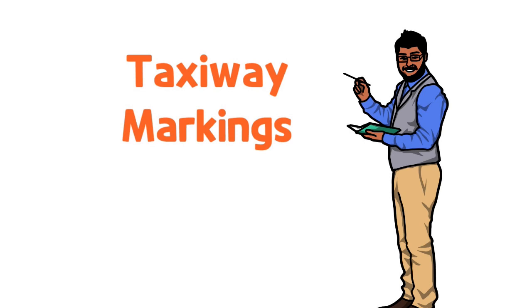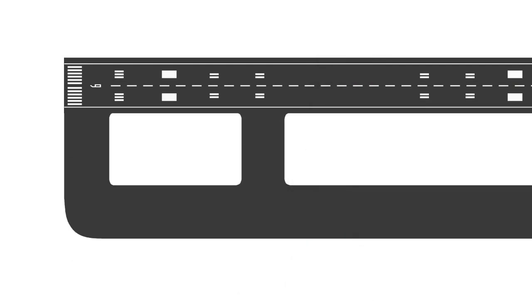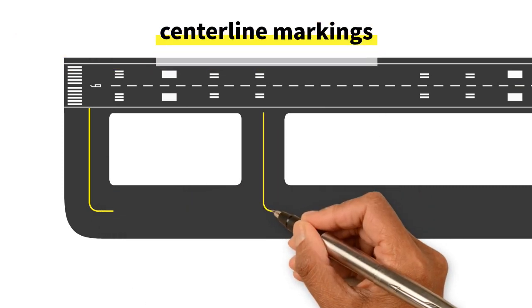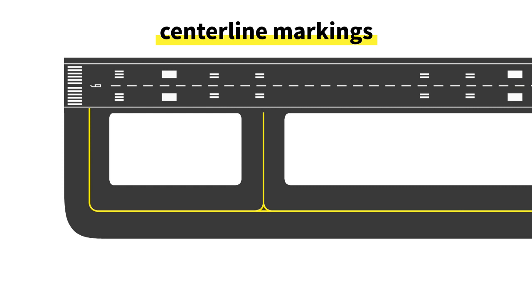Unlike the marking of the runway, all taxiway markings are yellow. Here's a runway and a taxiway. All taxiways, regardless of their width, have a surface painted taxiway centerline. Taxiway centerlines consist of a continuous stripe along the centerline of the designated taxiway.